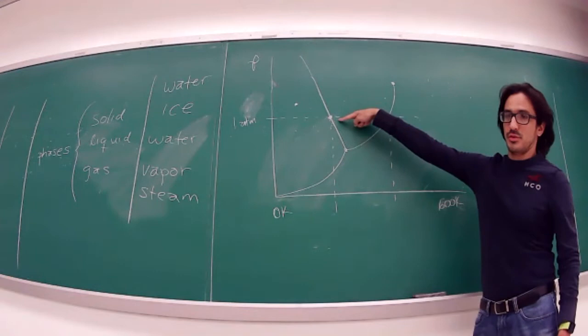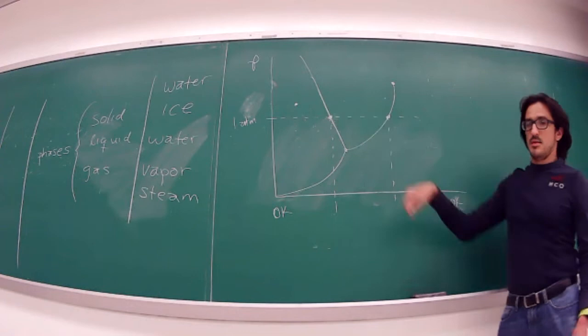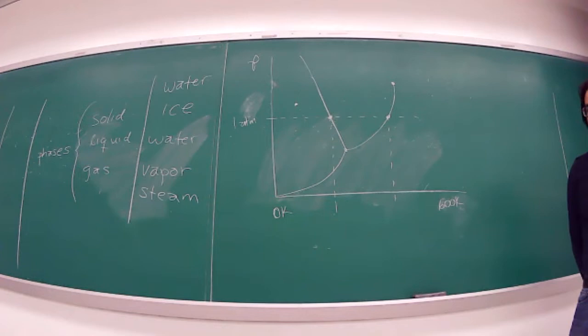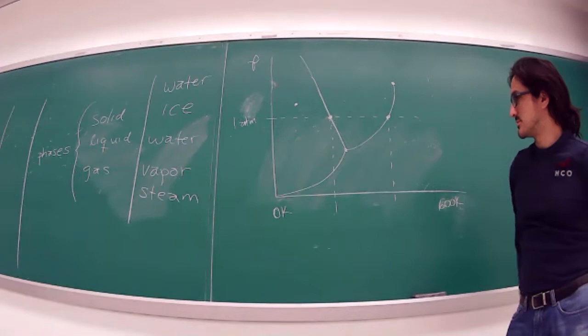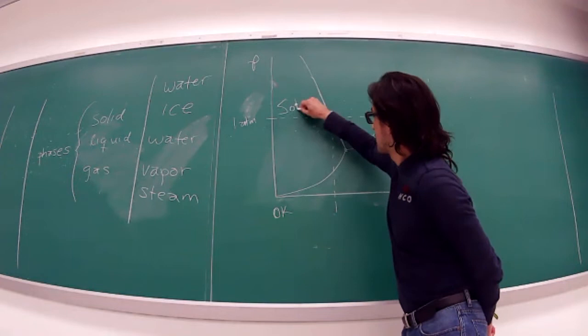In the low temperature range of the phase diagram we have the solid; in the intermediate temperature range we have the liquid; and at higher temperatures, the gas.